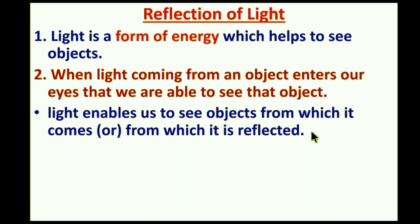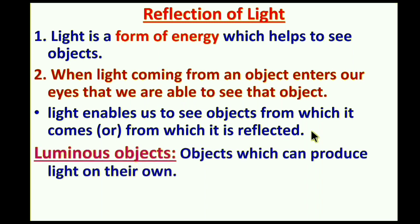Based on these objects, we can classify them into two types: luminous objects and non-luminous objects. Objects which can produce light on their own are called luminous objects.